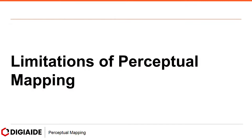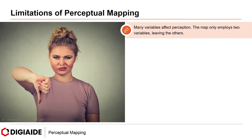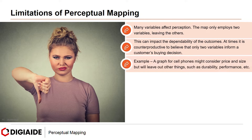Moving on to the limitations of Perceptual Mapping. Many variables affect perception, but the map only employs two variables, leaving the others out. This can impact the dependability of the outcomes. At times, it is counterproductive to believe that only two variables informed a customer's buying decision. For example, a graph for cell phones might consider price and size but will leave out other things such as durability and performance.